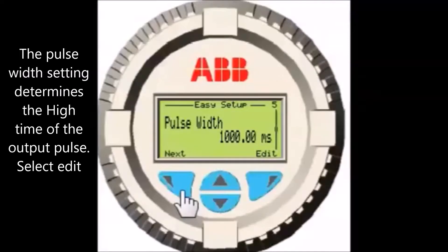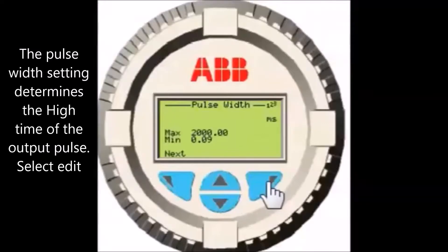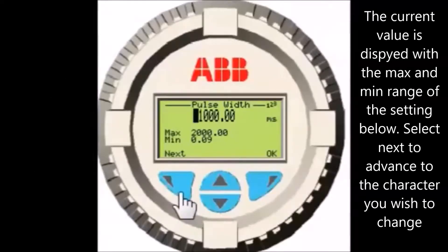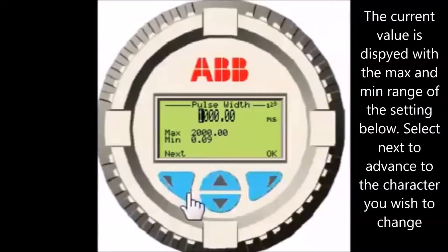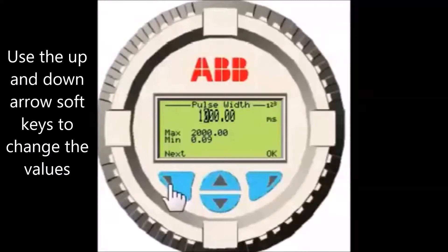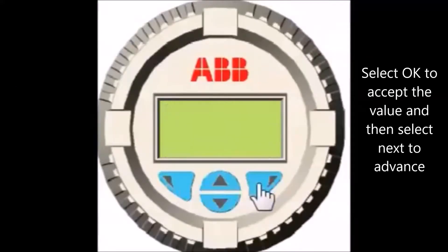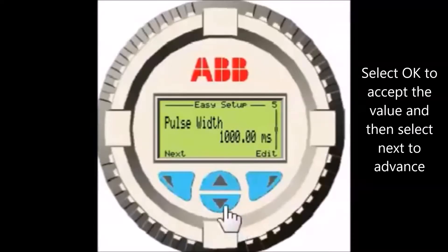Pulse width sets the high time of your output pulse. The device you are sending the pulse to will determine the minimum width of the pulse you must output — relays require a longer pulse than digital inputs. The current setting is displayed and the maximum and minimum values are shown below; these settings cannot be exceeded. Select Edit, then Next to place the cursor over the first character. Use the up and down arrow keys to change the character, select Next to advance to the next character, select OK to accept the value, and then Next to advance.